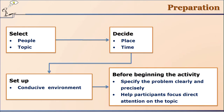Before beginning the activity, the teacher has to specify the problem clearly and precisely. For example, if the problem is stated as 'what can be done for cleanliness,' that is not specific enough. Are we talking about cleanliness around our school, our college, our city, or a village? That has to be specified, because every problem is specific and solutions come for solving that particular problem. Write it on the board, and help participants focus their attention on the topic. If they go off track, bring them back.